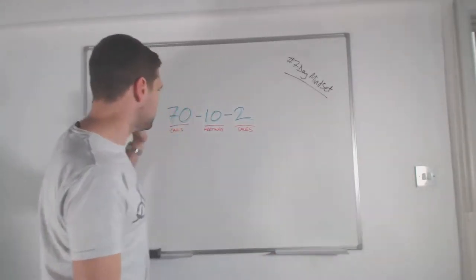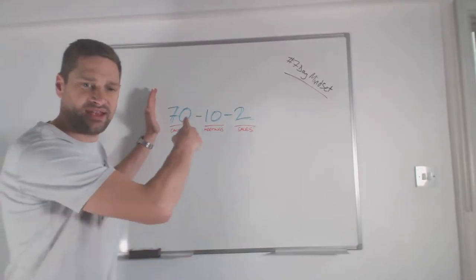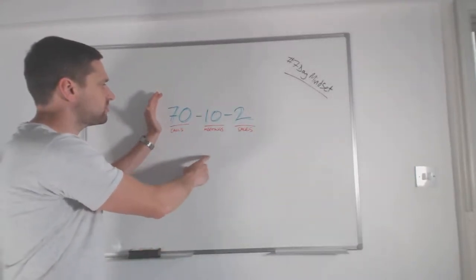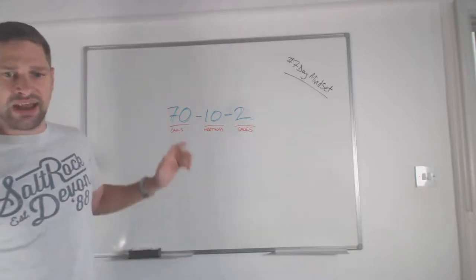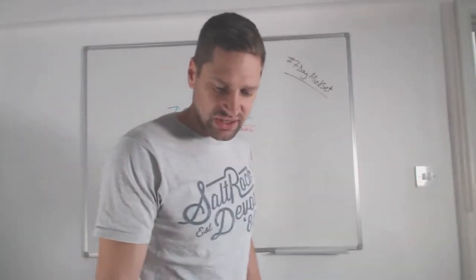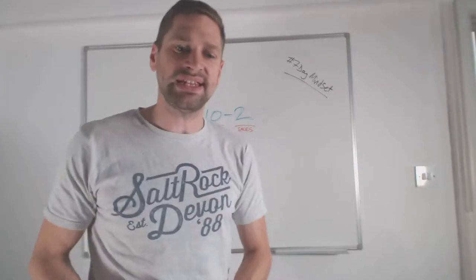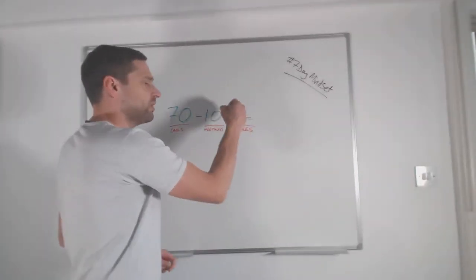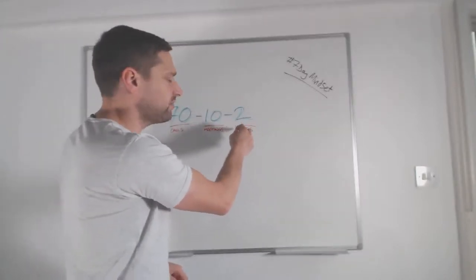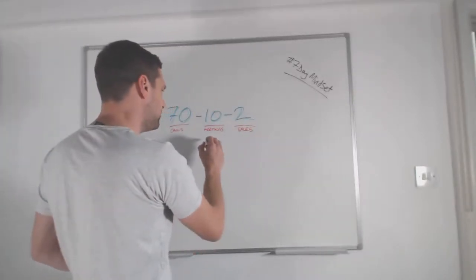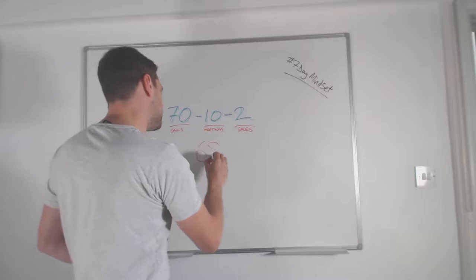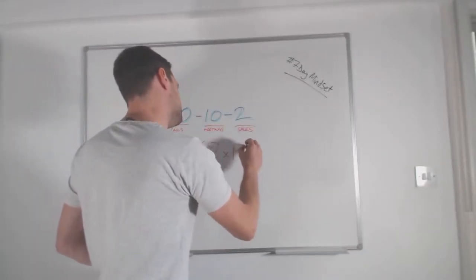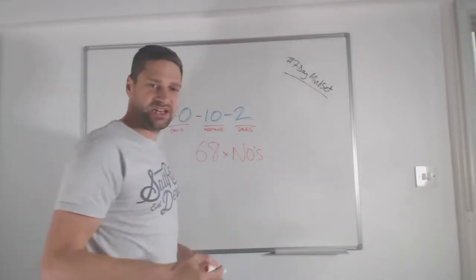So 70-10-2. We all know that this is a sales marketing funnel type thing. 70 calls should lead to 10 meetings and two sales. Now the one thing that I will mention at this point, and this is what today's mindset challenge topic is all about, is that in order to get those two sales, i.e. two yeses, we've got to get you guessed it, 68 no's.